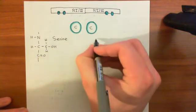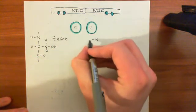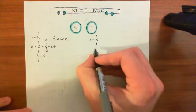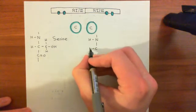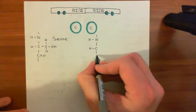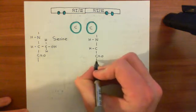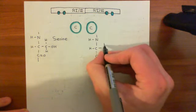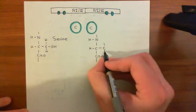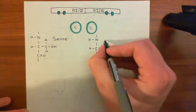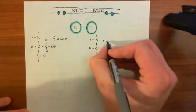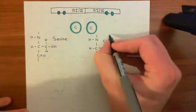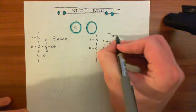Here is threonine: the amino group, the alpha carbon, and the carboxylic acid group. The R group of threonine is very similar to serine except that it has an extra methyl group — a CH3 group — with an alcohol group coming off. So threonine differs from serine by that additional methyl group.